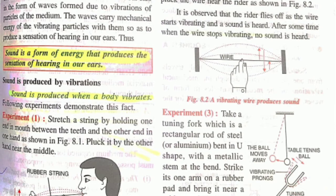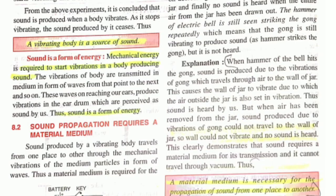What causes sound? Sound is caused when a body vibrates. You will read in detail about how we hear sound in biology. Two questions can come: what causes sound, and what is sound and how is it produced? Sound is a form of mechanical energy — mechanical energy is required to start vibrations in the body producing sound.